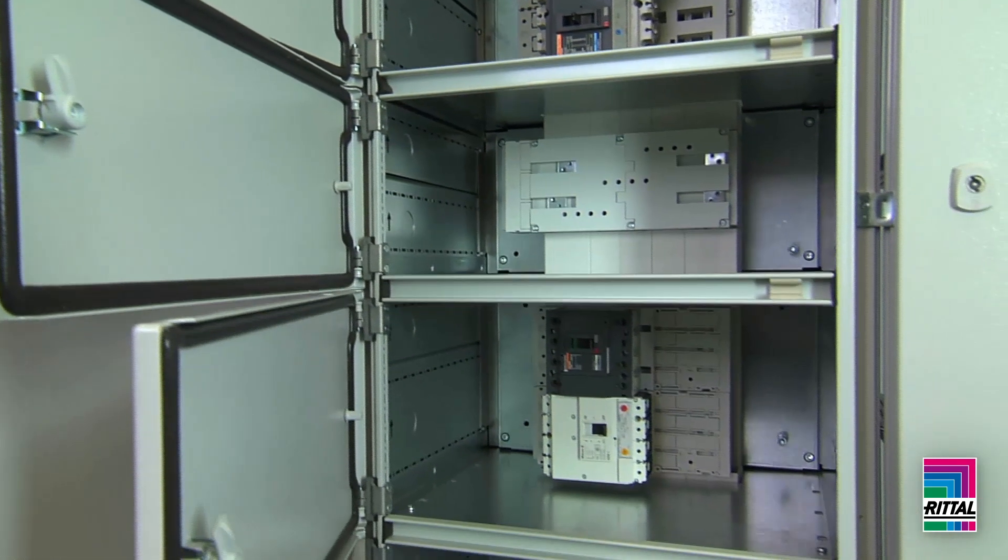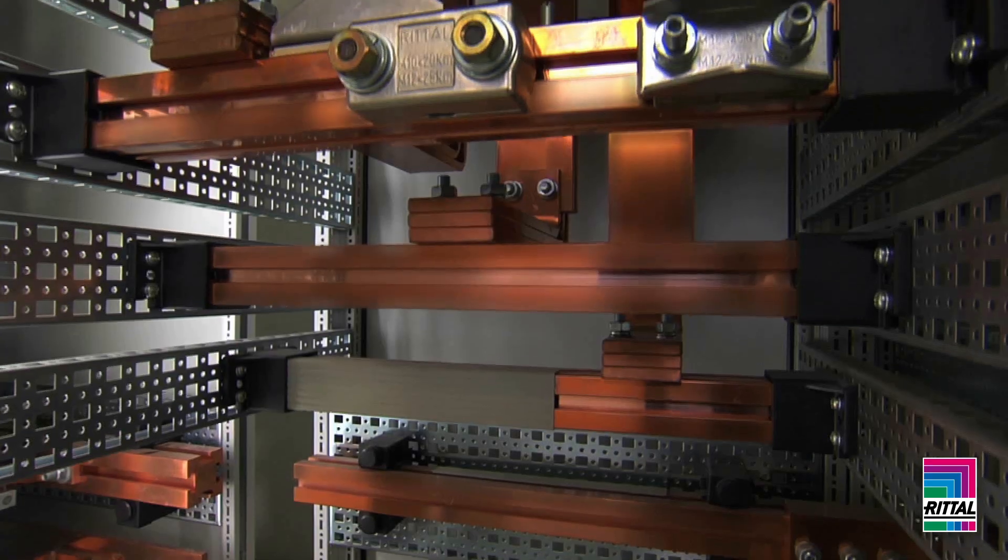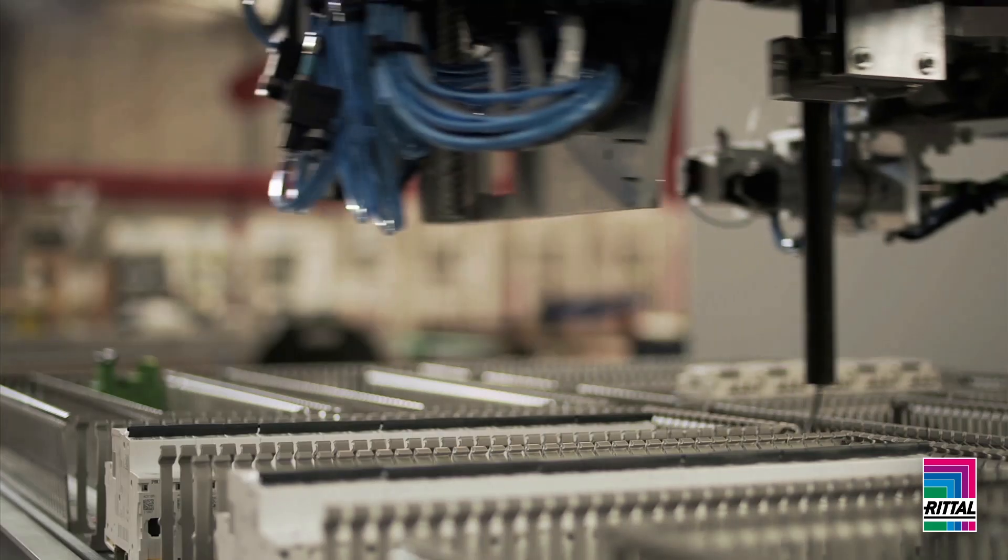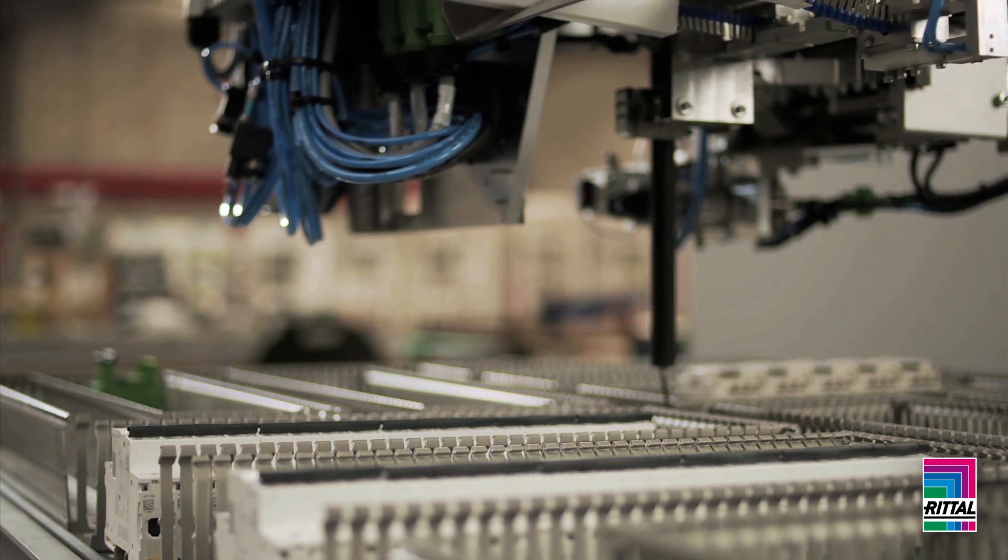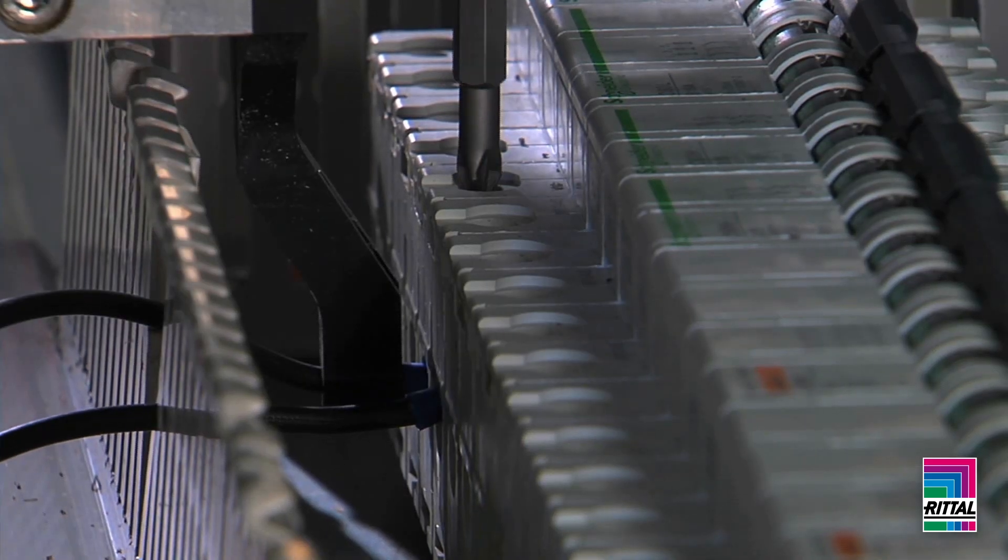Once the design is completed, a modular Rittal enclosure is selected for its ease in hardware and cooling systems installation. Adding custom holes and installing enclosure electronics is automated thanks to Kiesling's panel cutting and wiring machines.